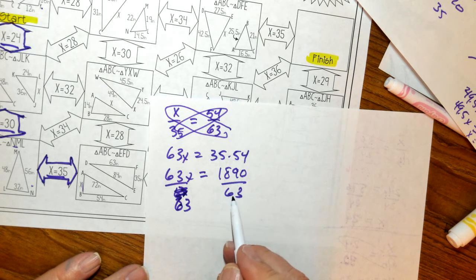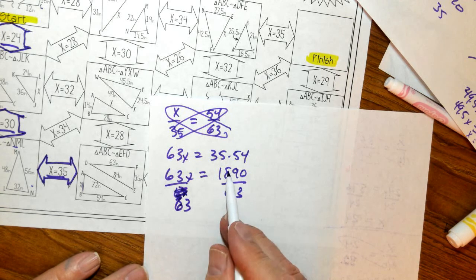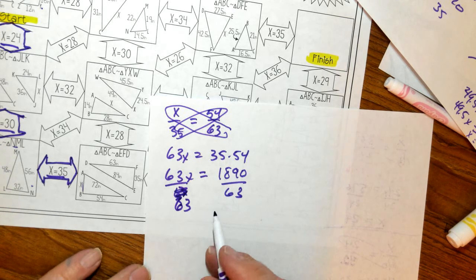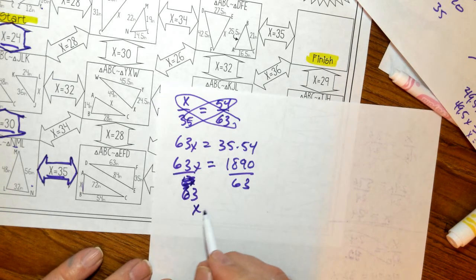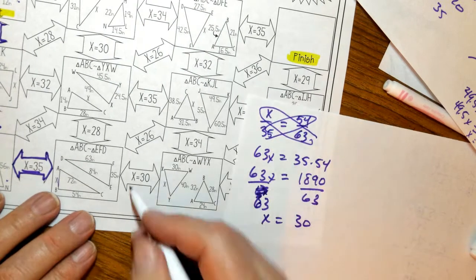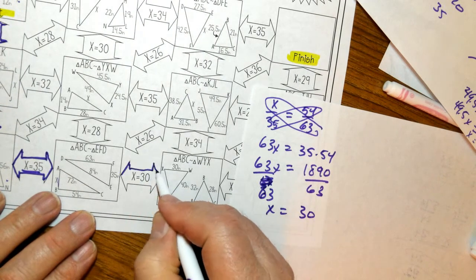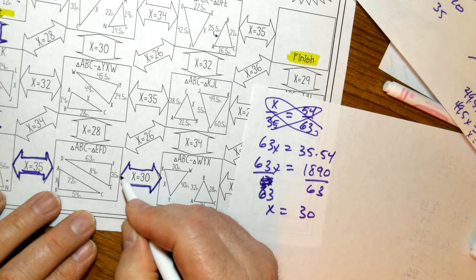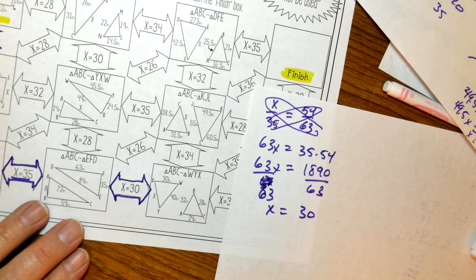That's exactly 30 because 3 times 6 is 18, 3 times 3 is 9. So this is X is equal to 30. So do I have that answer? Yep, I do. So that's my answer. So now I'm going to do this one.